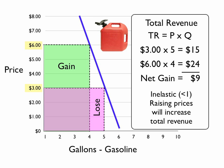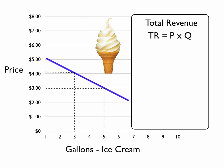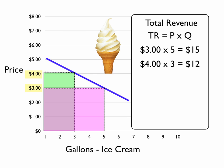Let's take a look at ice cream cones at a three dollar price and a four dollar price. At a three dollar price we're going to sell five units of ice cream — our total revenue would be three dollars times five, or fifteen dollars. Now if we raise the price to four dollars, our new total revenue would be four dollars times three units, or twelve dollars.